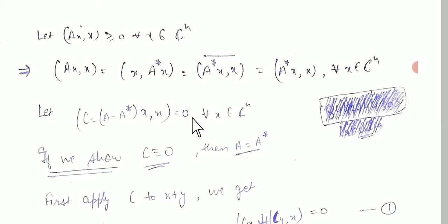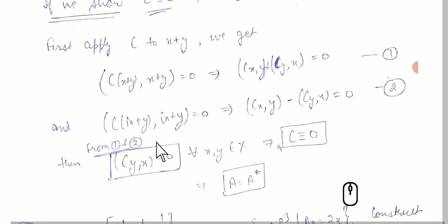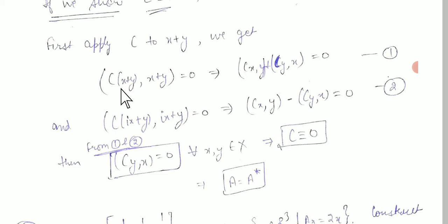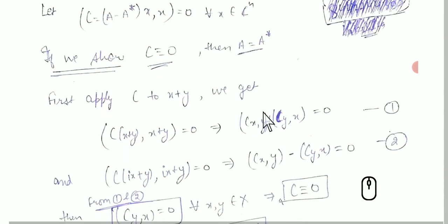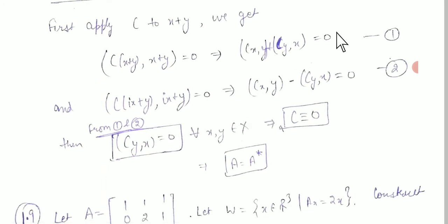If ⟨Ax, x⟩ = 0 for all x, and if we can prove c is identically zero, then A = A* follows. We apply c to x+y: opening gives c(x,y) + c(y,x) = 0. Then applying c to x+iy gives c(x,x) + c(x,y) − c(y,x) = 0. From both equations together, c(y,x) = 0 for all x,y in X, meaning c is identically 0, so A = A* and option C is correct.